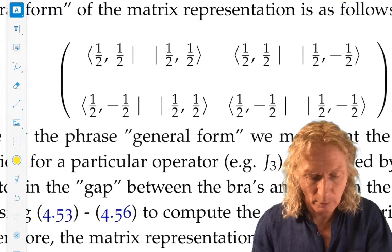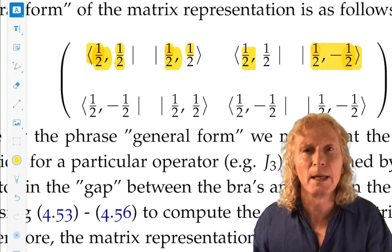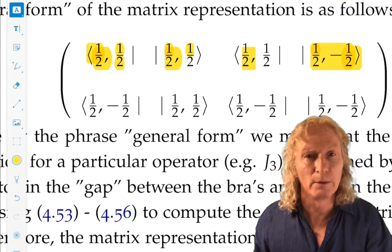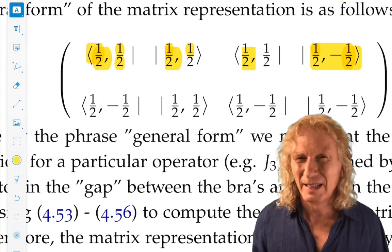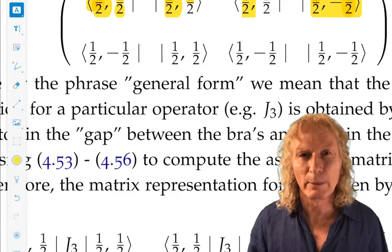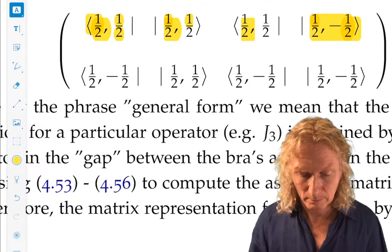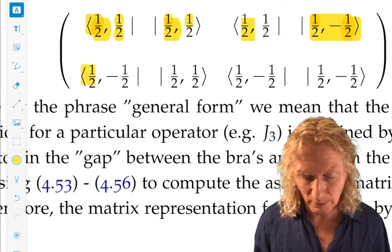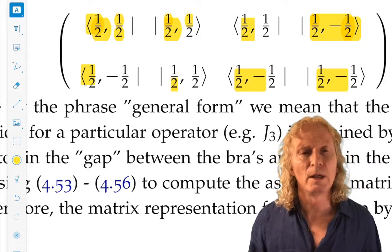Okay? Remember, we have a bra on the left, ket on the right, bra on the left, ket on the right, and the operator, which goes in between, for which we compute the matrix elements of, with respect to this basis. Now, it ought to be starting to be clear why we needed a common basis for these operators. And then we have, see, j is the same in all of these. The only thing that changes is m.